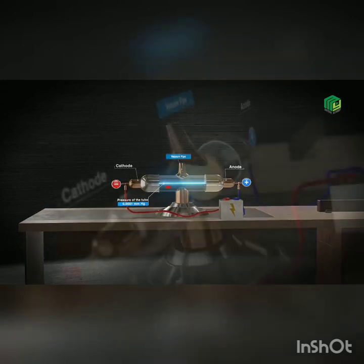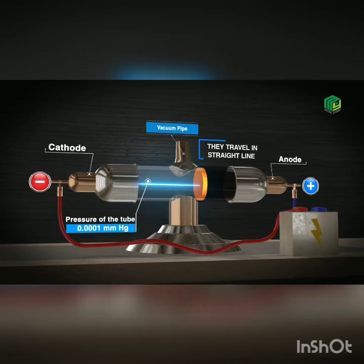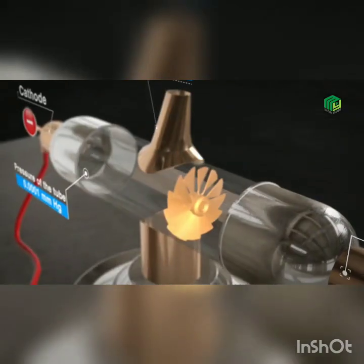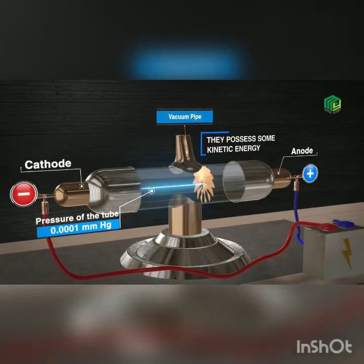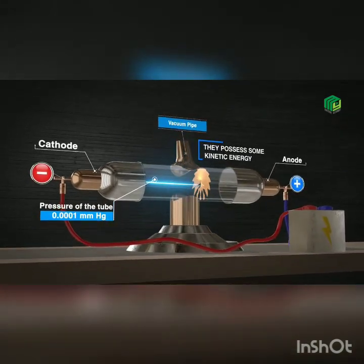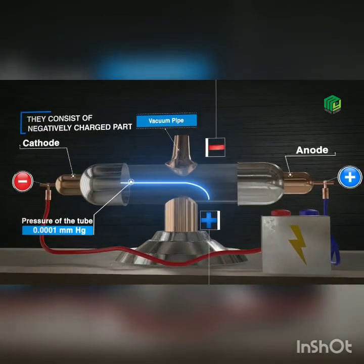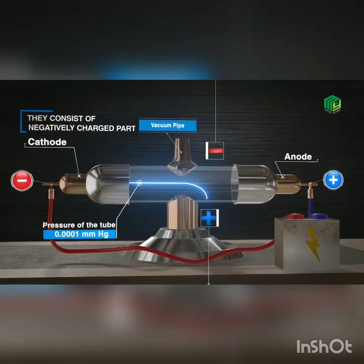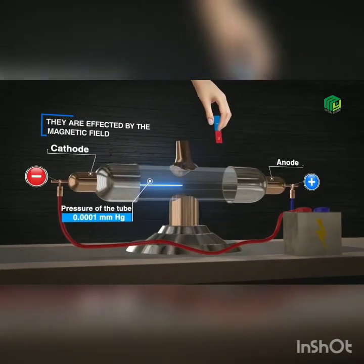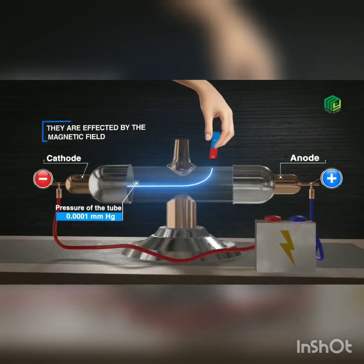Properties of cathode rays: 1. When any object is placed in the path of the cathode rays, these rays cast shadows. This shows that cathode rays travel in a straight line. 2. When a wheel was placed in the path of cathode rays, the wheel rotates. This shows that rays consist of some particles and some kinetic energy. 3. In the presence of an electric field, the rays are deflected towards the positive plate. This confirms that cathode rays consist of negatively charged particles. 4. In the presence of a magnetic field, the rays are deflected. This shows that the cathode rays are affected by the magnetic field.